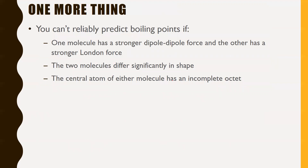You can't reliably predict boiling points if one molecule has a stronger dipole-dipole force and the other has a stronger London force — it becomes a tug of war and you can't determine which wins. Similarly, if the two molecules differ significantly in shape, or if the central atom of either molecule has an incomplete octet, you also can't reliably predict it.